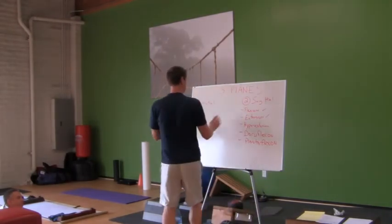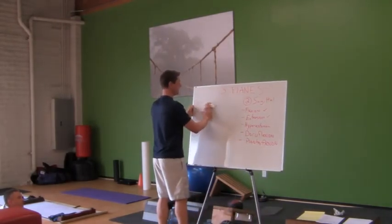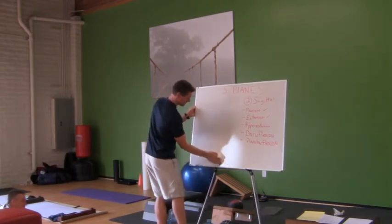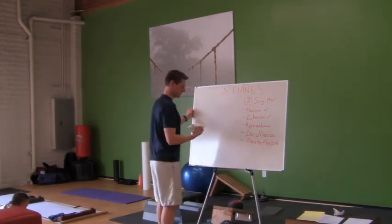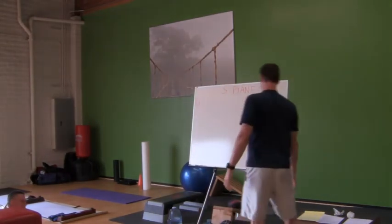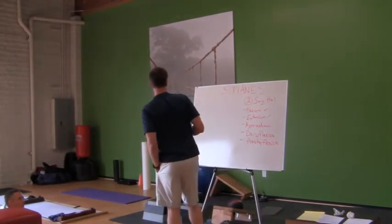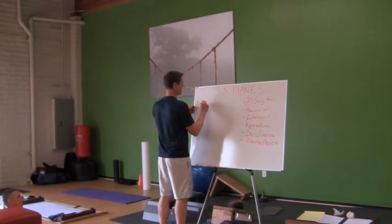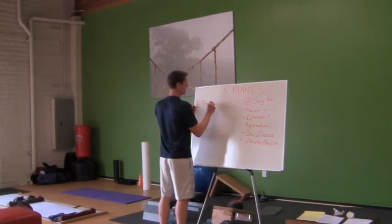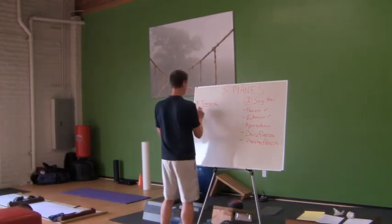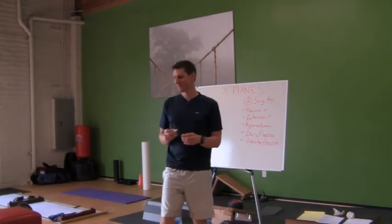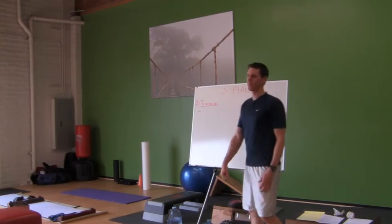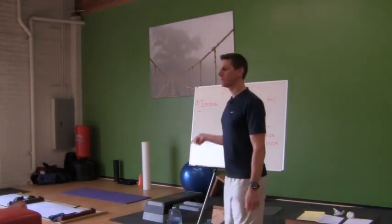There's a third plane that divides the body in half, and it's already been mentioned. It divides the body into top and bottom halves — it's called the transverse plane. It's one of Jason's favorites. Well, it's because it's everything that rotates within the body. Because I play golf, and we rotate around our spine so much.